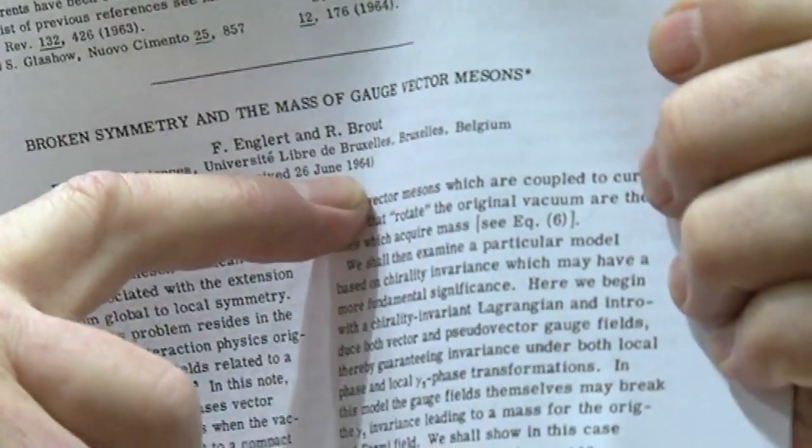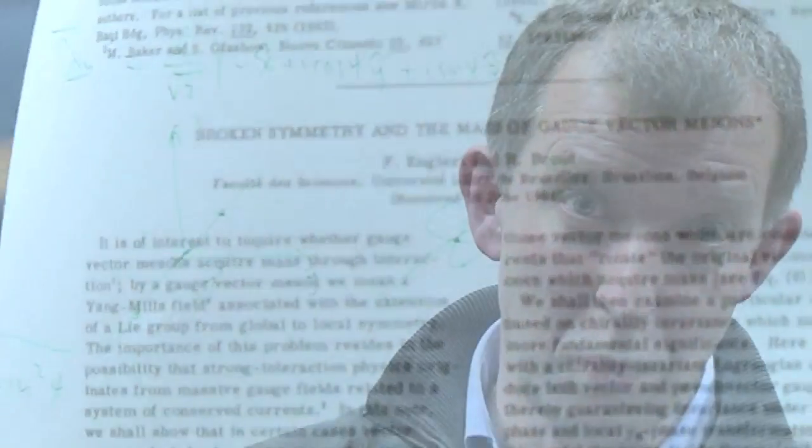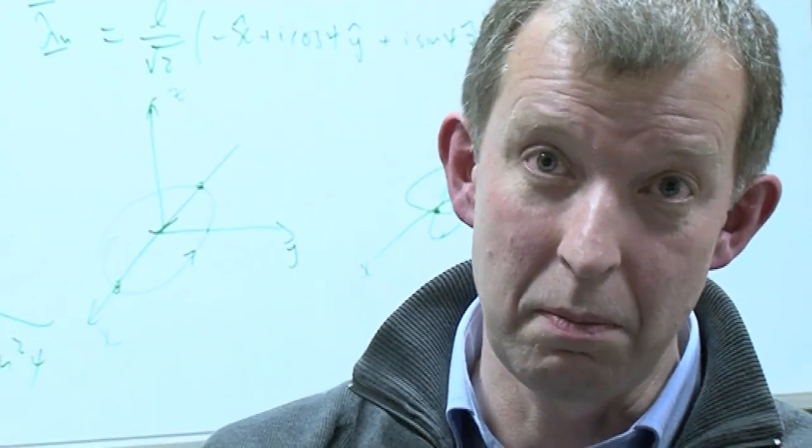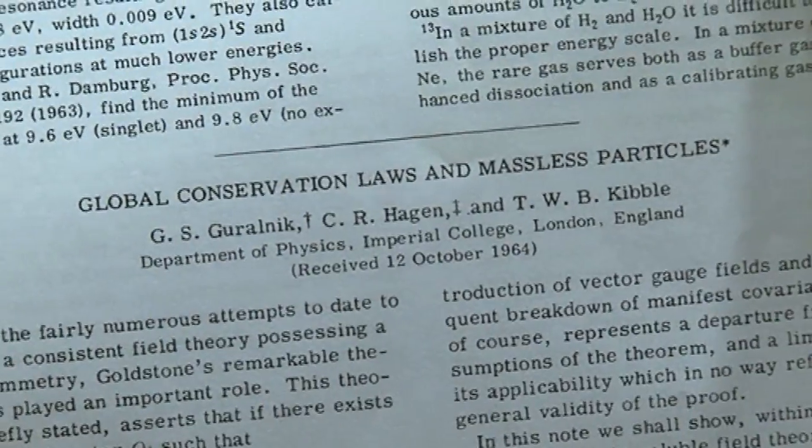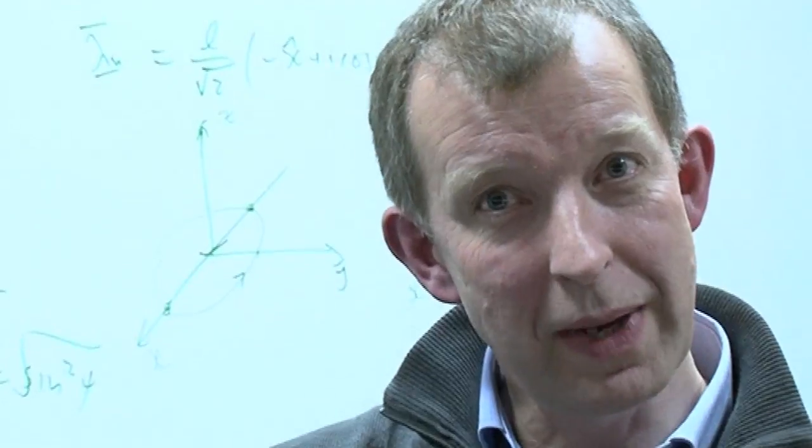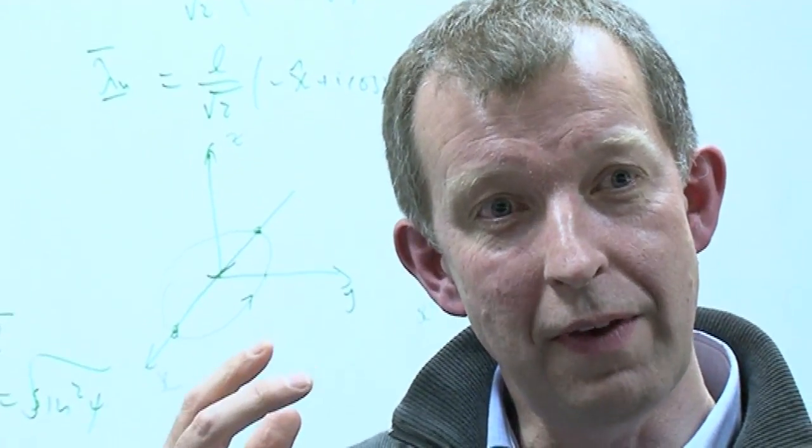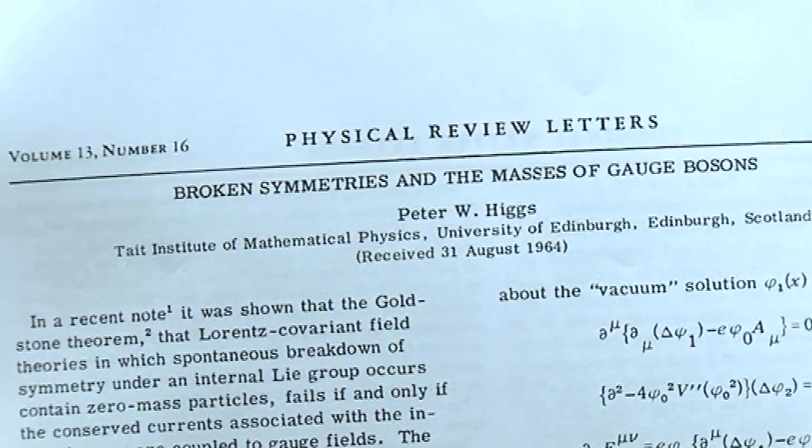There was a group, Braut and Engler were working on it in Belgium. And then there was a group of three people working on it at Imperial College, including a good friend of mine, Tom Kibble. And the paper, they were working independently of each other on different aspects of it. And, in fact, the papers all appeared within a few months of each other. In fact, almost a few weeks of each other.